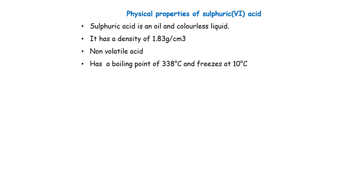Then, lastly, as a bonus, we have some physical properties of sulfuric acid. This is an oil and it's a colorless liquid. It has a density of 1.83 grams per cubic centimeters, meaning it's denser than our water. It's a non-volatile acid. That means it can't easily escape or it can't easily turn into vapor, probably due to its density. It also has a boiling point of 338 degrees Celsius and can freeze at 10 degrees Celsius.